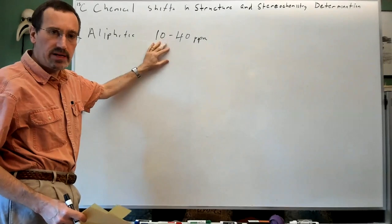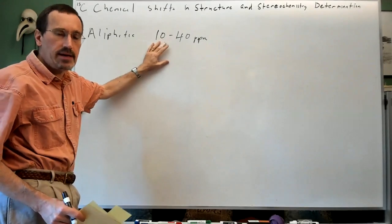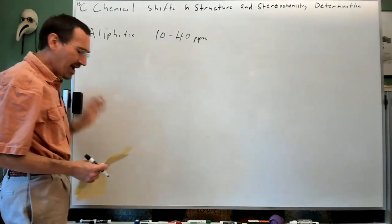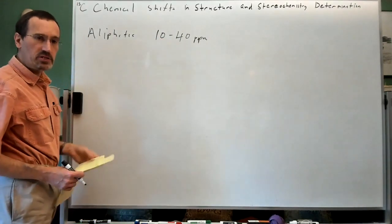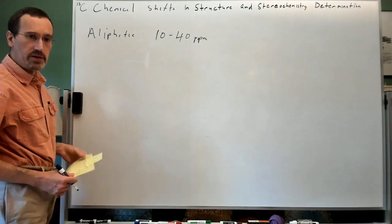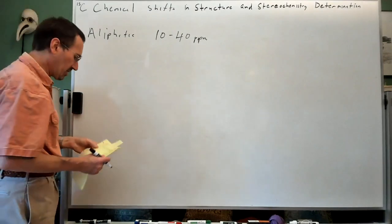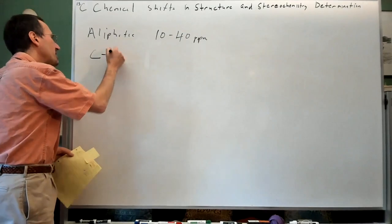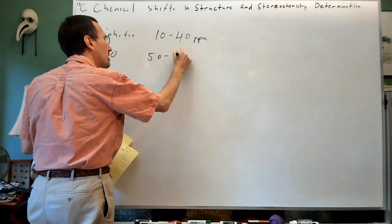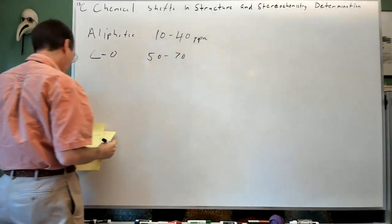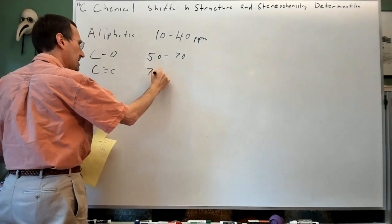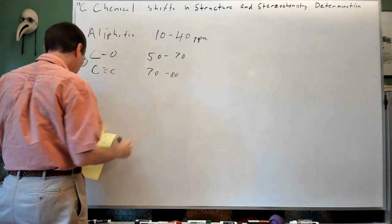We're going to talk about the factors that lead to chemical shifts — it's actually really interesting and really diagnostic in terms of a fingerprint, not just of nearby functional groups, but also of other carbon substituents. Carbons next to an oxygen are typically about 50 to 70 ppm. Carbon-carbon triple bonds are typically about 70 to 80 ppm.